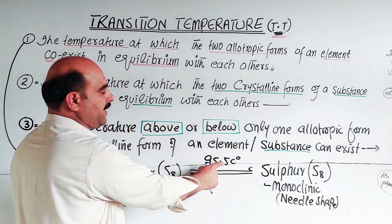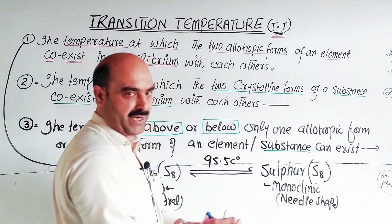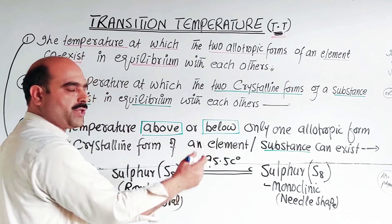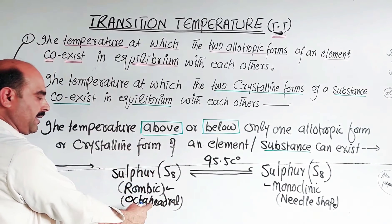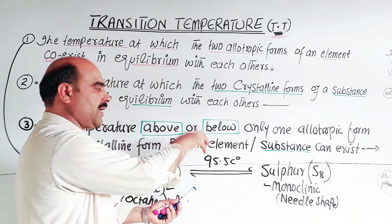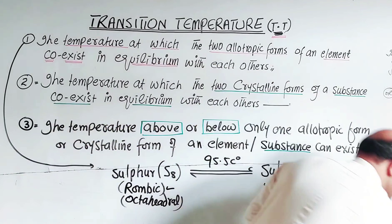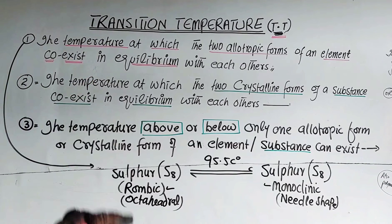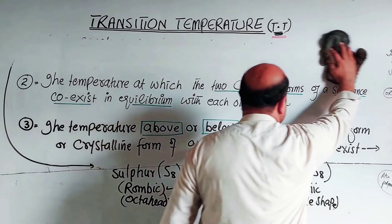Above 95.5°C, only the monoclinic or needle-shaped form exists. Below 95.5°C — say 95.4 or lower — only the rhombic or octahedral form exists; the monoclinic or needle shape does not appear. Only at the temperature where both allotropic forms of the element co-exist in equilibrium is it called the transition temperature. Note this example carefully.